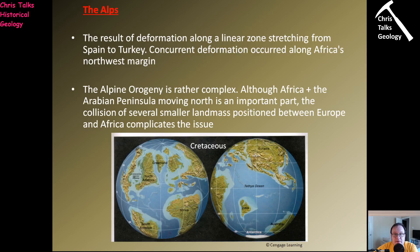The Alps are the result of deformation along a zone stretching from Spain to Turkey, with concurrent deformation along Africa's northwestern margin. The Alpine orogeny is actually rather complex — although Africa and the Arabian Peninsula moving north is important, we also have the collision of several smaller land masses positioned between Europe and Africa. These include southern France, Spain and Portugal, Italy, the Balkans, and Greece — so we actually have several small masses of continental crust between the two continents.